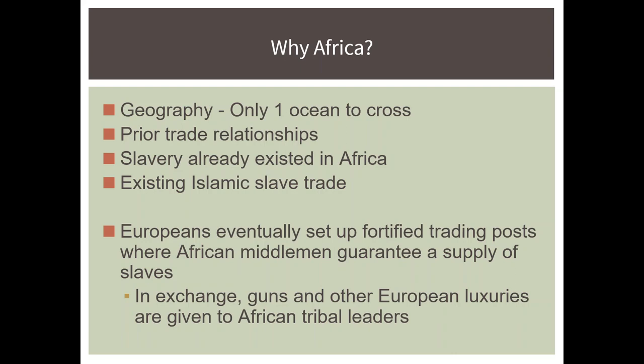European powers — specifically the Portuguese and eventually the English — set up fortified trading ports where African slaves would be brought to the coast by middlemen, who were basically told to go into the continent and provide a certain number of slaves. In exchange, these African middlemen were given guns and other European luxuries like finished tools and products. And if these African middlemen became accustomed to those European luxuries and wanted to keep getting them, they had to keep providing more slaves.